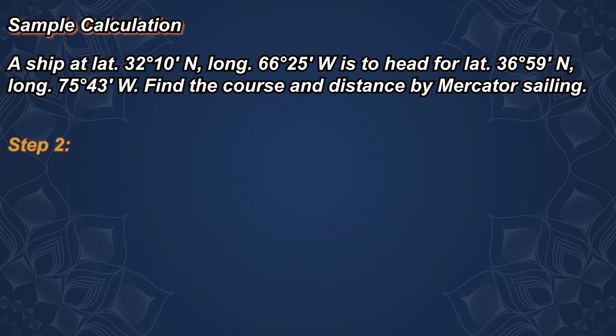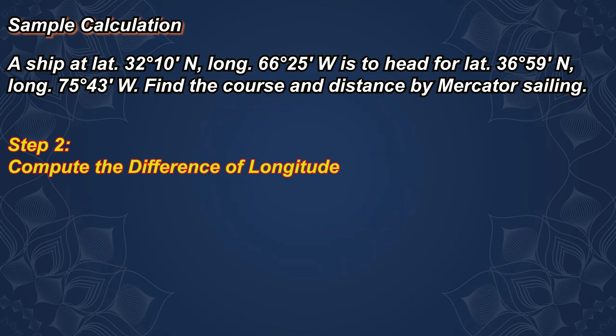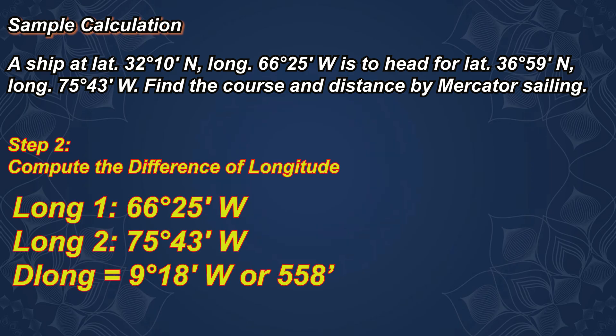Step 2: Compute the difference of longitude. Longitude 1 is 66 degrees 25 minutes west. Longitude 2 is 75 degrees 43 minutes west. The difference of longitude is 9 degrees 18 minutes west, or 558 minutes.